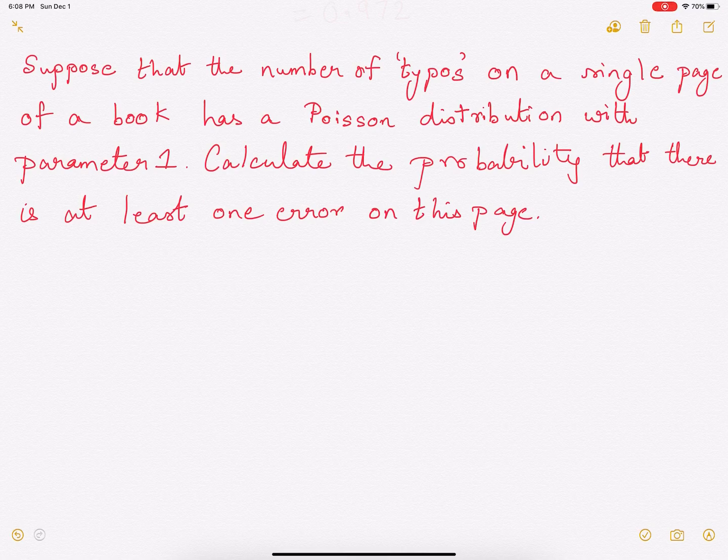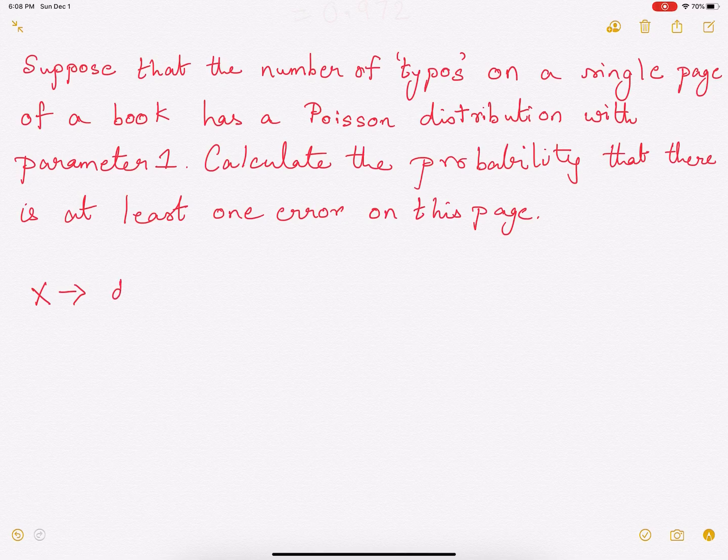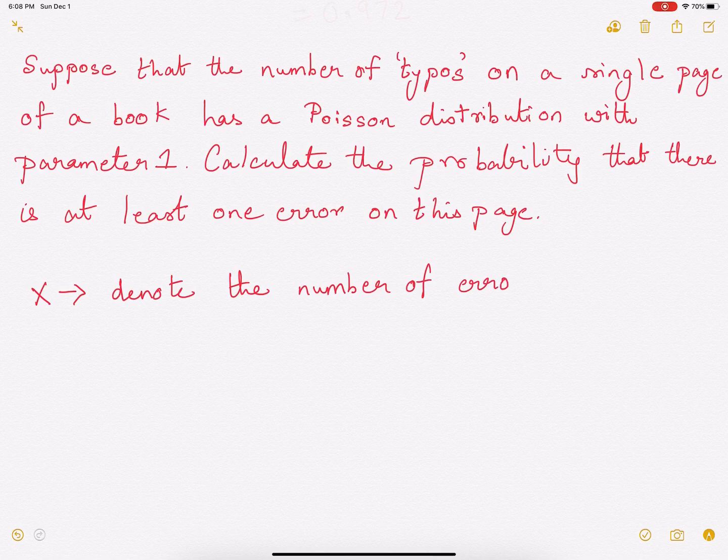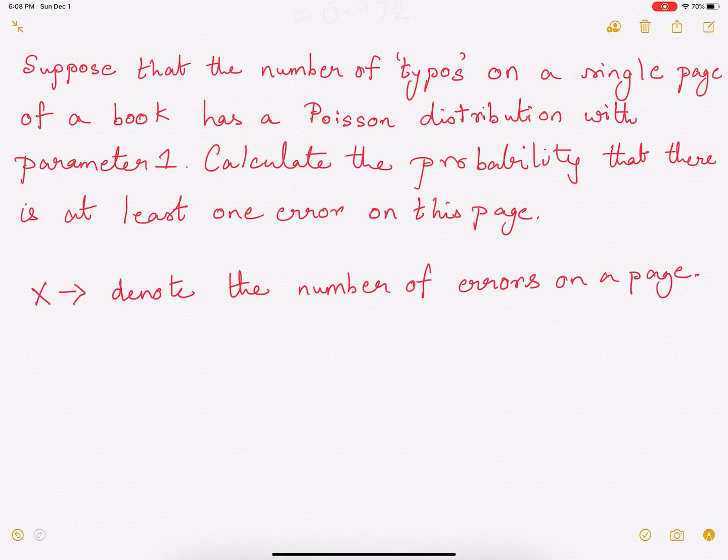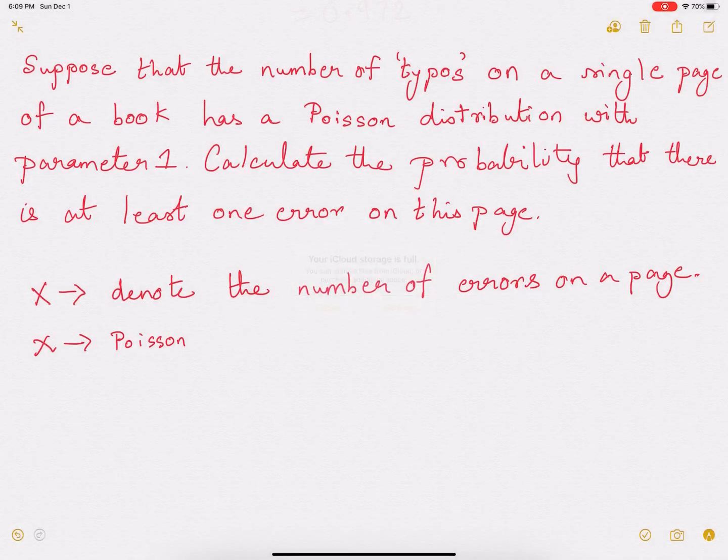What we are being asked is there is at least one error on this page. So let X be the random variable, the number of errors on a page. So X is that random variable which denotes the number of errors on this page and X follows a Poisson with parameter 1.